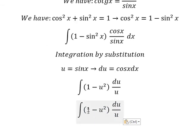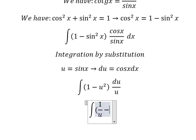So we will have one divided by u minus u squared divided by u, which gives us one over u minus u.